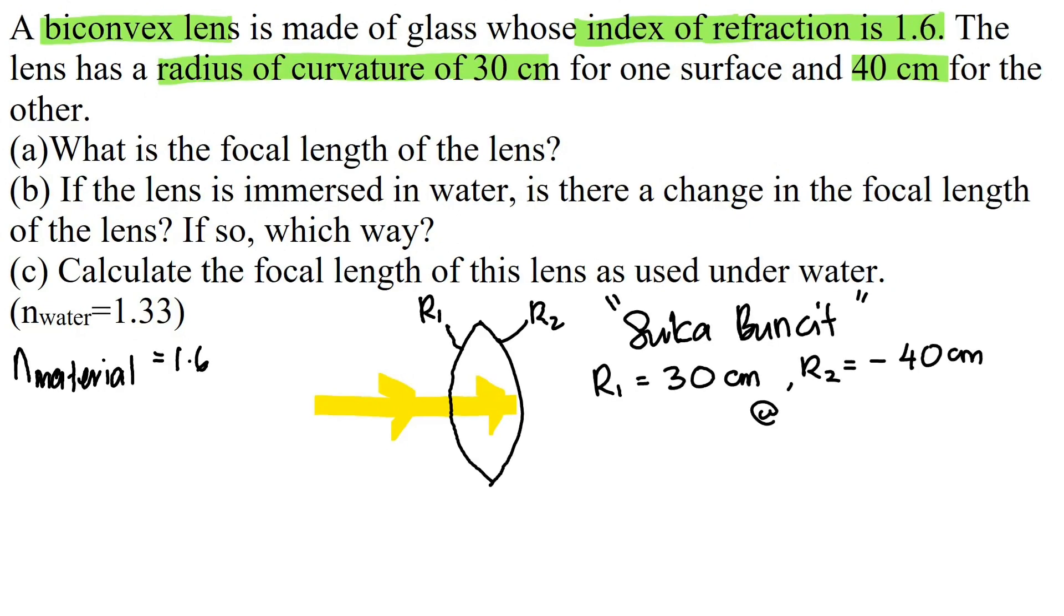Let me erase this. Again, ray comes from the left, hitting on R1 and it is sukaboncit. So R1 is positive 40 cm. And when the ray hits R2, it is negative 30 cm.